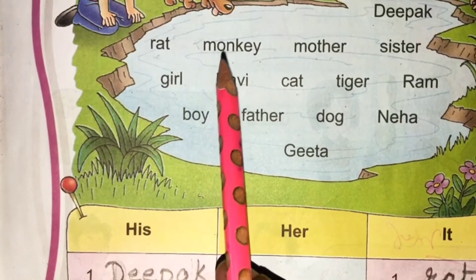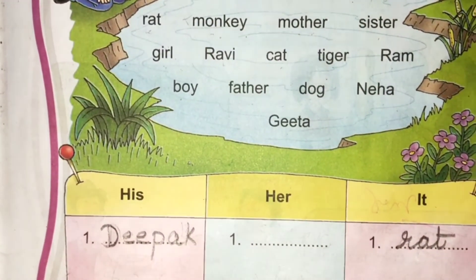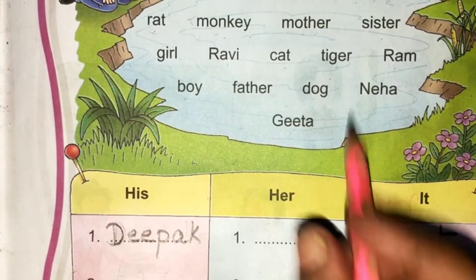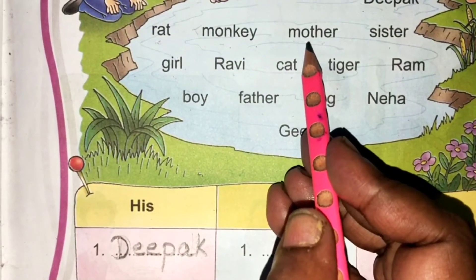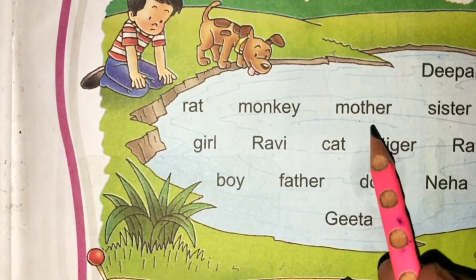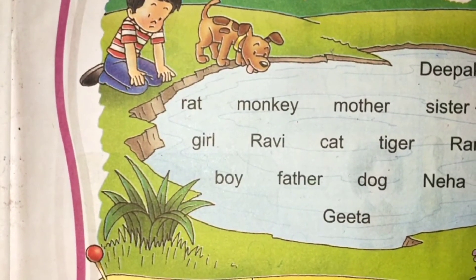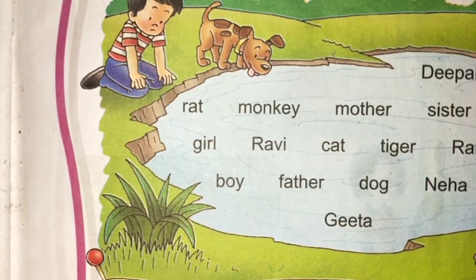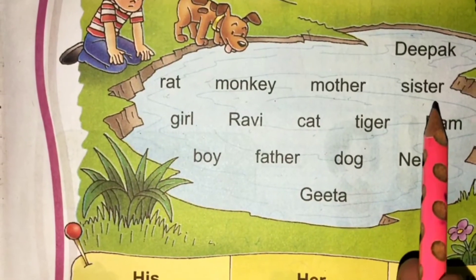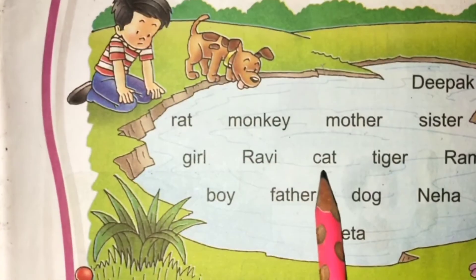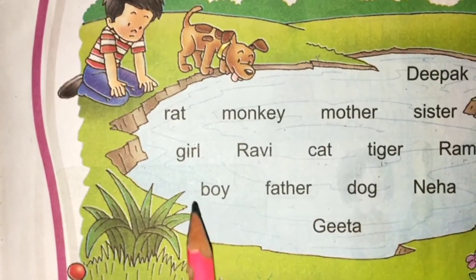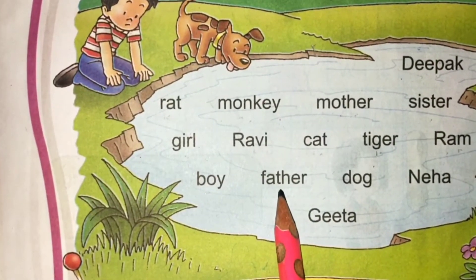This is a monkey. Monkey is an animal. His, his. His cat, tiger, his. Boy, his. Father, his. Dog, his.